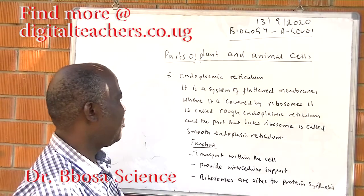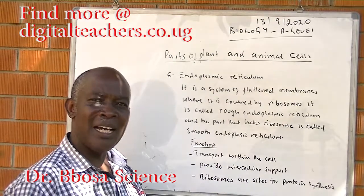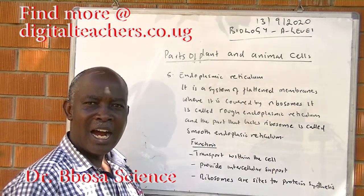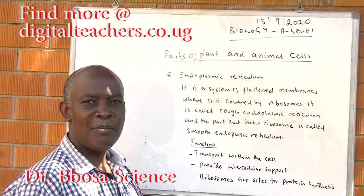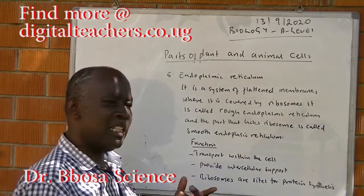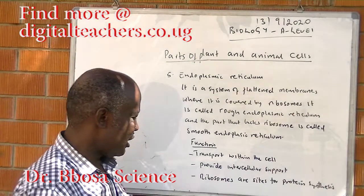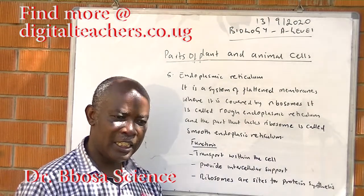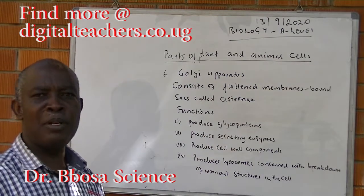Five: endoplasmic reticulum. It is a system of folded membranes. The part covered by ribosomes is called rough endoplasmic reticulum, and the part that lacks ribosomes is called smooth endoplasmic reticulum. Functions of endoplasmic reticulum include transport within the cell, providing intracellular support, and ribosomes are sites for protein synthesis. Six: Golgi apparatus, which consists of flattened membrane-bound sacs.